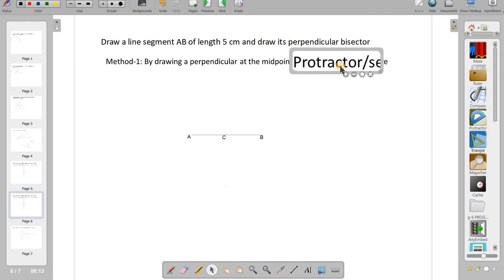In the previous session, we have already learned to draw the perpendicular bisector using set square. Now, we will use the protractor to draw the perpendicular bisector. So, first I have drawn a line which is 5 cm in length.